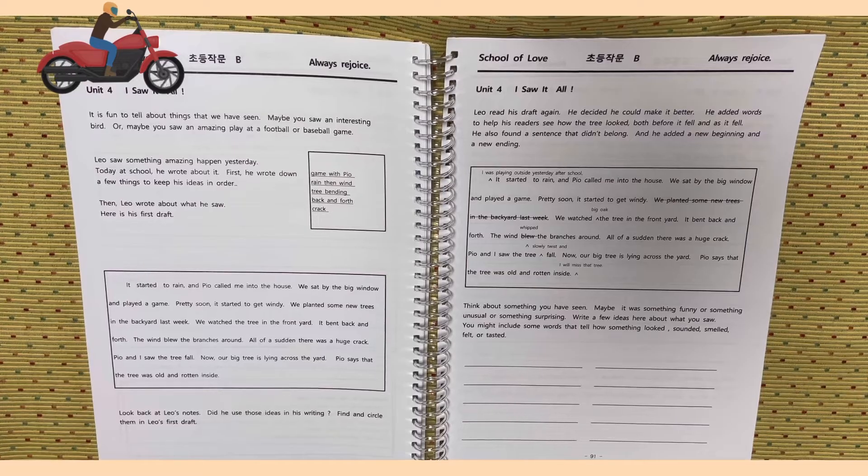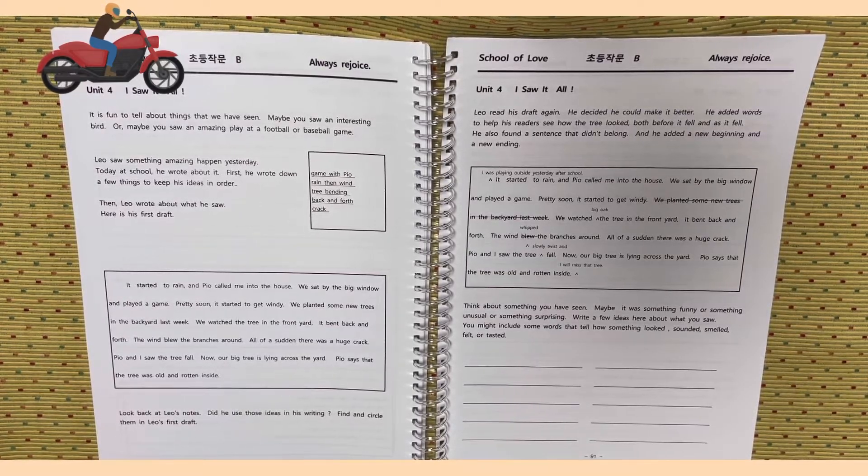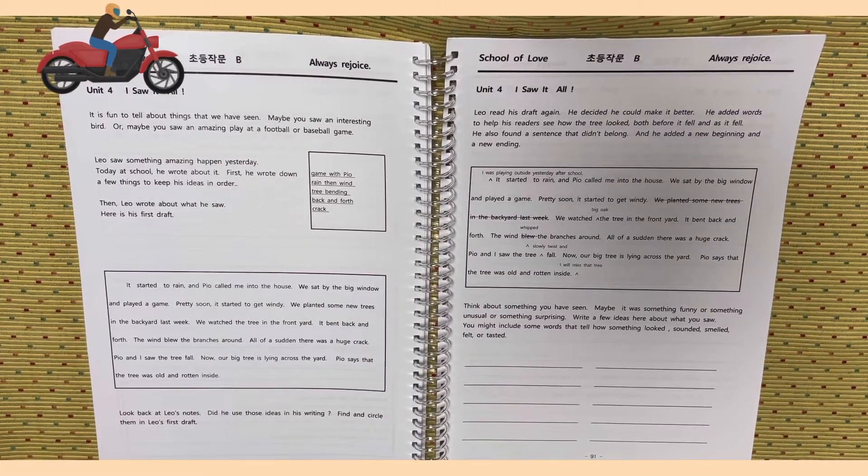First, he wrote down a few things to keep his ideas in order. Then Leo wrote about what he saw. Here is his first draft.